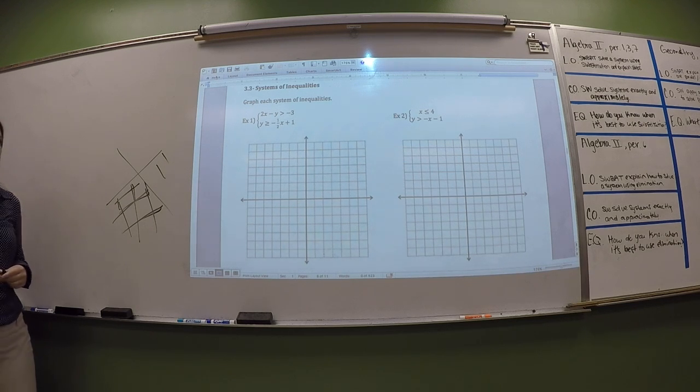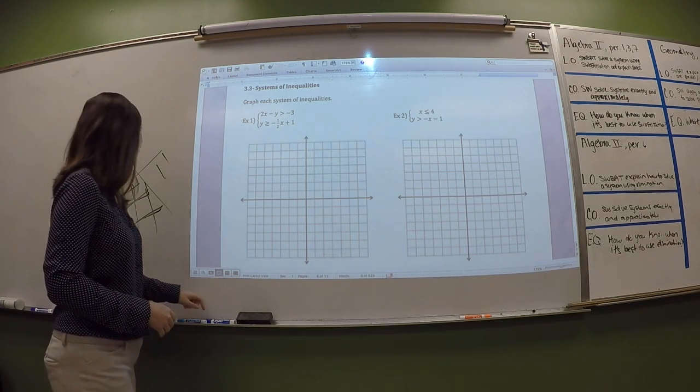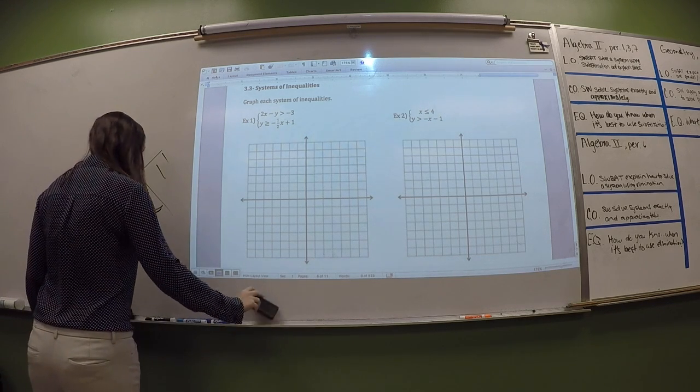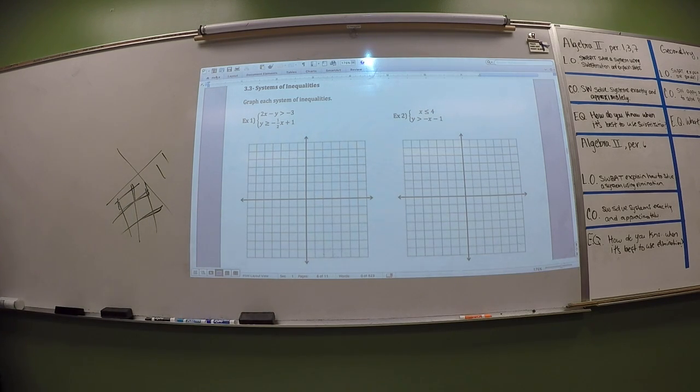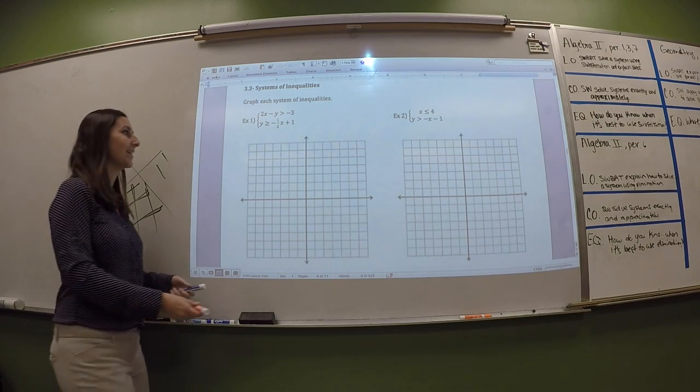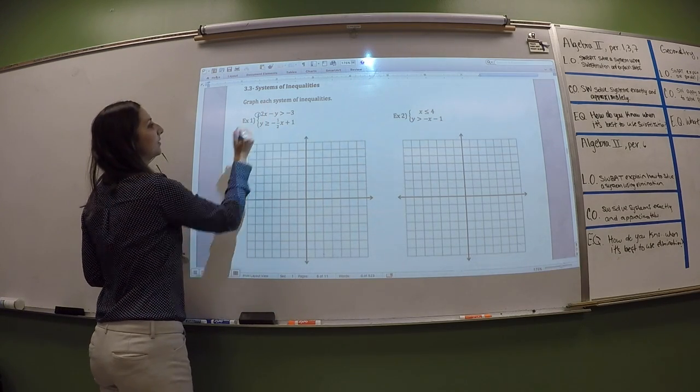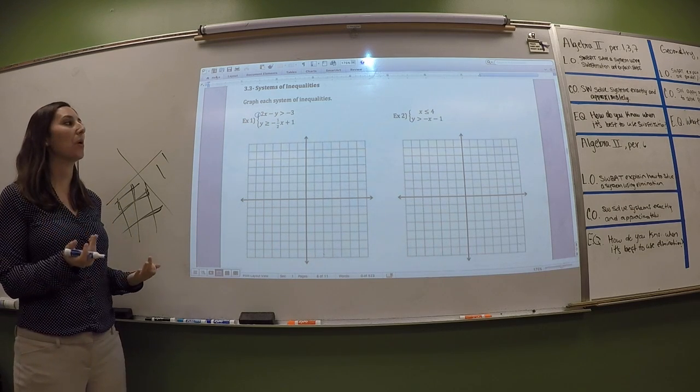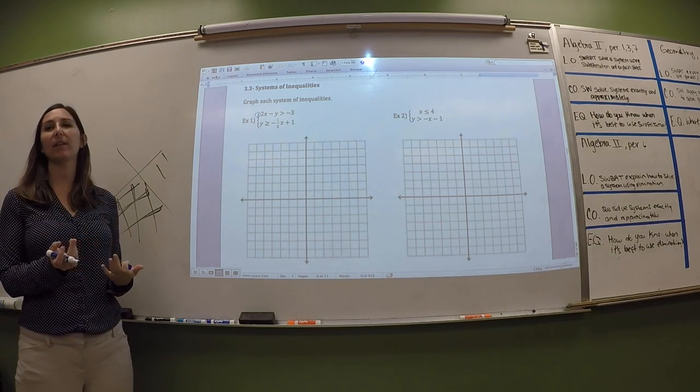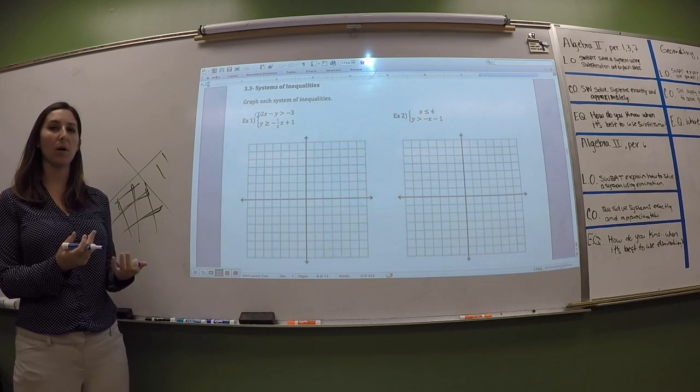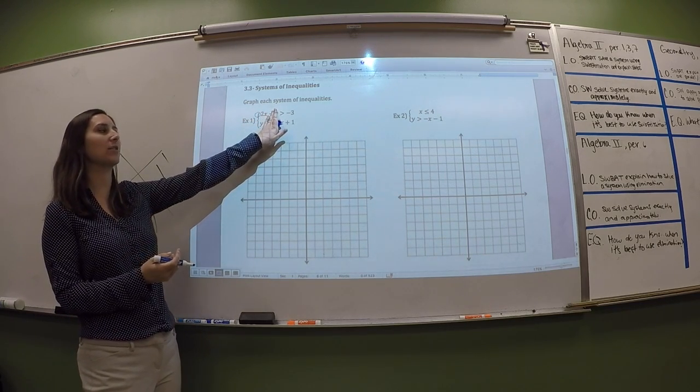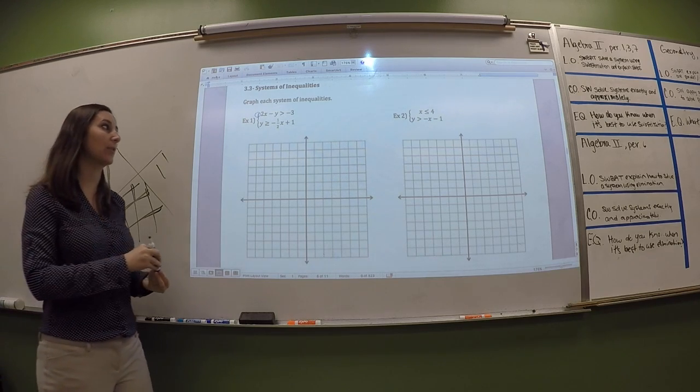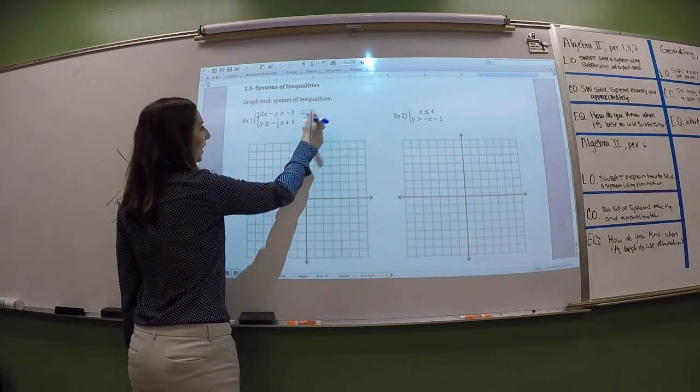I'm going to use colors so that we can see that area. Let's look at this first equation. So that first equation, we probably don't want to be graphing intercepts. I mean, maybe the y-intercept, but the x-intercept is going to be a fraction. So we want to put this in slope-intercept form.